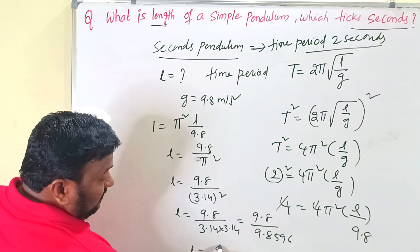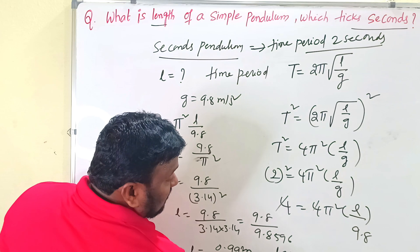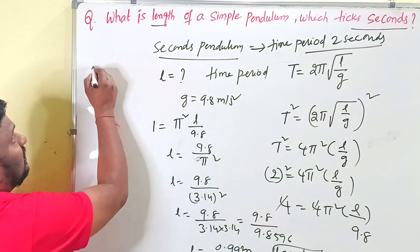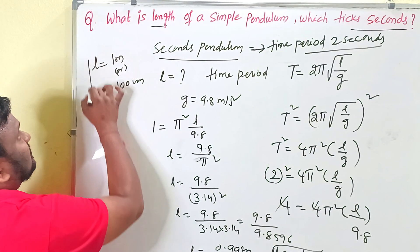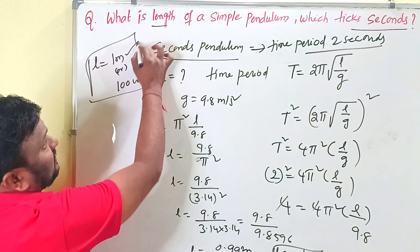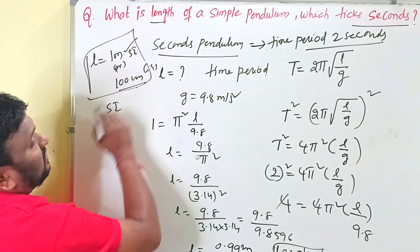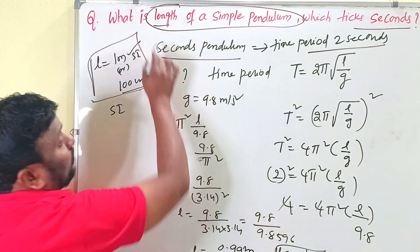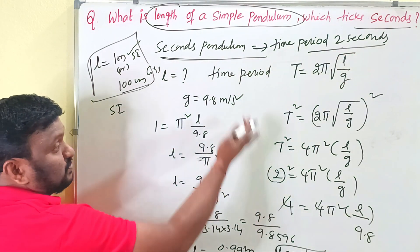Dividing, we get approximately 0.99 meters, which is approximately 1 meter. So the length of the seconds pendulum is 1 meter in SI units, or 100 centimeters in CGS units. When you know the definition of a seconds pendulum and its value, this problem becomes straightforward.